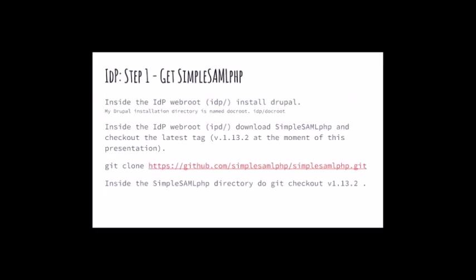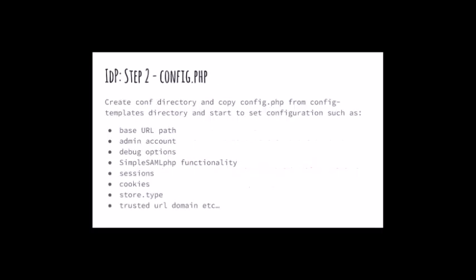To install the IDP, first of all we need to have a Drupal installation under my directory. Then I'll create the SimpleSAMLphp directory and clone the repo from GitHub, checking out the latest tag available. After that, I'll start to create my configuration file. SimpleSAML comes with a bunch of templates for configuration found in the directory 'config templates'. I'll create another directory, copy config.php from the config templates, and paste it into my config directory. From this config.php I can set up my base URL path, admin account for SimpleSAMLphp, choose the debug option, the SimpleSAMLphp functionality, session type, cookies, and the store type — one of the most important parts.